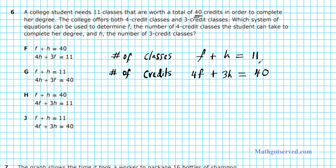So this is the system of equations we need to solve in order to find the total number of 4-credit classes and 3-credit classes she needs to take to graduate. We can clearly see that the correct answer is option letter J.